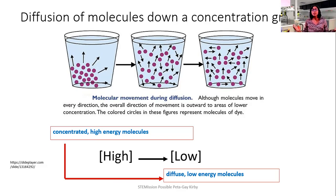Let's look at the molecular movement during diffusion. Although they move in every direction, the overall movement is outwards. Remember that term, concentration gradient? Towards areas of lower concentration. The colored circle represents the molecules of whatever dye you are observing. Here is a nice flow chart that summarizes what we have been covering so far. Concentrated high-energy molecules diffuse to the low-energy molecules.